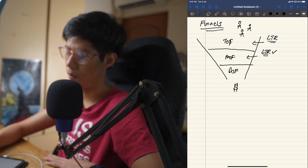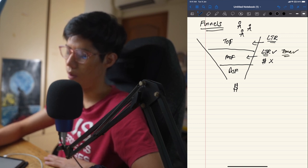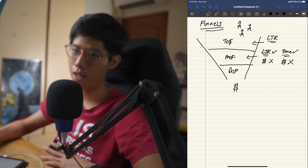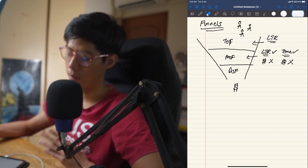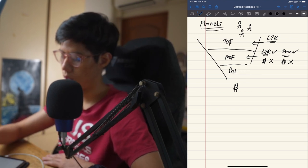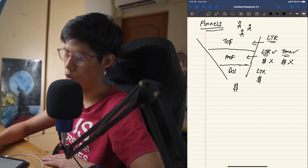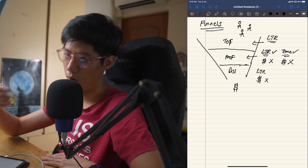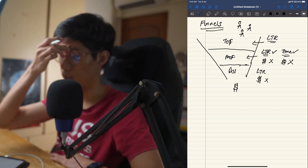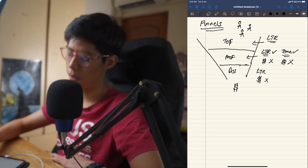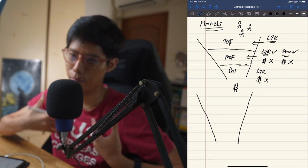Middle of funnel people already like, trust, and respect you, but they have not bought from you yet. They've given you a time commitment but not a money commitment — they're like acquaintances. Bottom of funnel people really, really like you and are willing to give you money, but haven't yet. They already have a very urgent problem and know about it but haven't pulled the trigger.